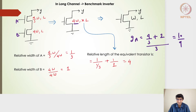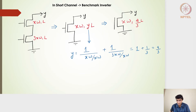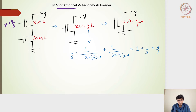Let's analyze the short channel current model. We have two transistors marked as xW comma L and 3xW comma L. In the long channel case, x was 4/3, giving one transistor of 4/3W and another of 3 × 4/3 = 4W. Now I'm generalizing to xW and 3xW. The equivalent single transistor width will be xW — previously we took 4/3W and estimated y to be 4/3W.